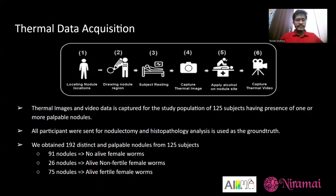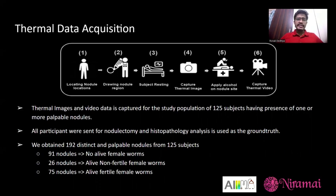This thermal data was captured for a study population of 125 participants recruited in Ghana, all showing presence of one or more palpable nodule regions. All participants underwent nodulectomy and histopathology analysis, which was considered as ground truth. Out of 125 patients, 192 distinct palpable nodule regions were identified, since a single patient can have nodules at multiple locations. Of these, 91 had no alive female worm, 26 had alive but non-fertile worms, and 75 had alive fertile female worms.